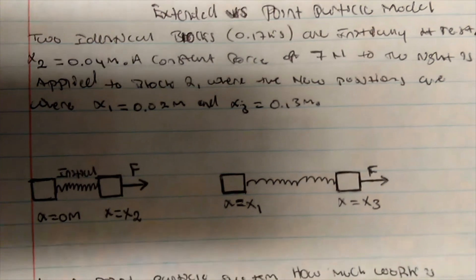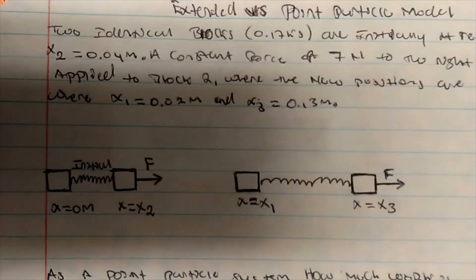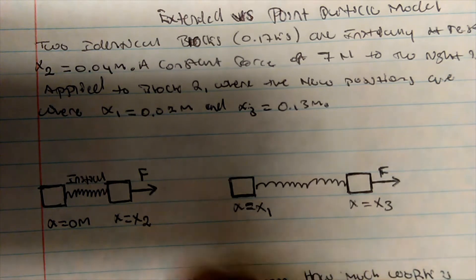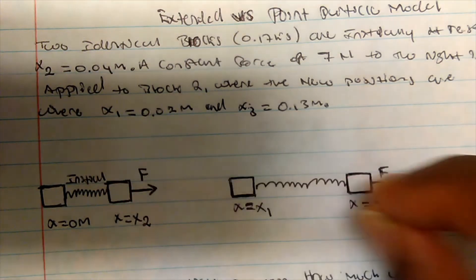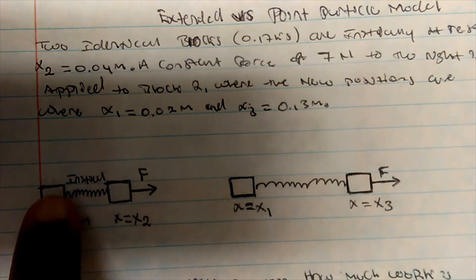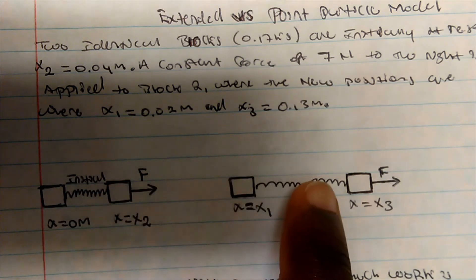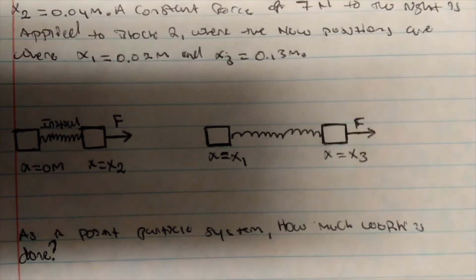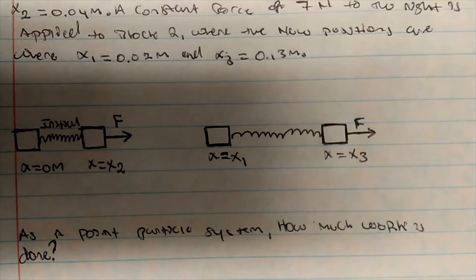Let's look at a little problem and analyze it. I have two blocks connected by a spring, which applies some sort of force. I moved one block a little bit, and obviously the other block moved too, so we created two new positions. The question is: as a point particle model, how much work is done?